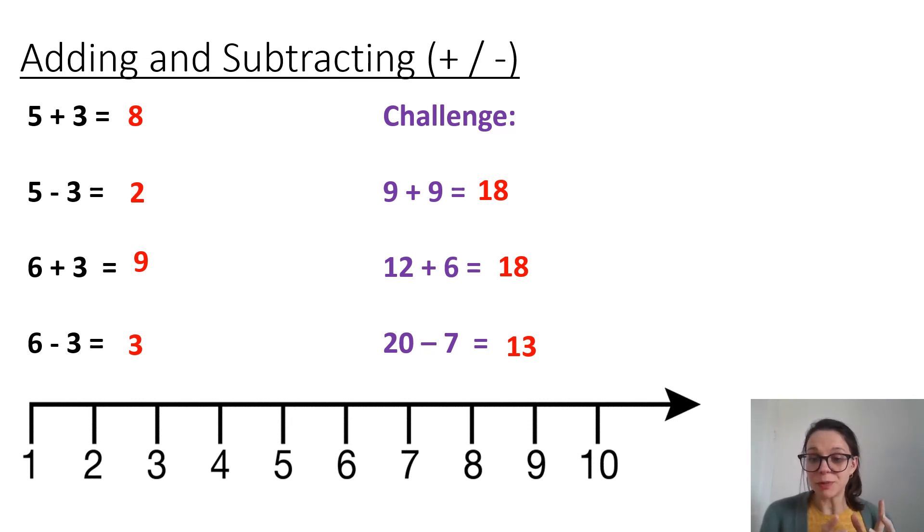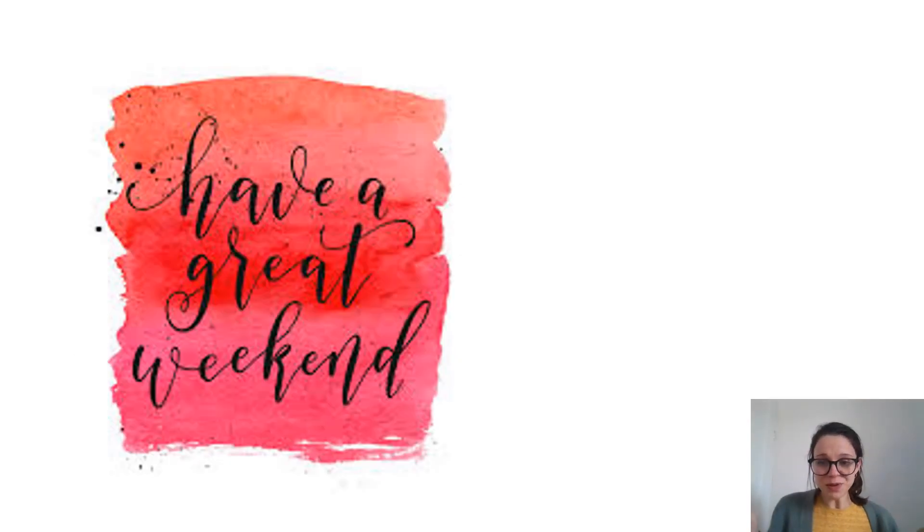And we can use our number bonds to help us with the second question. Twenty take away seven. Well, if it was ten take away seven, the answer would be three. So twenty take away seven is thirteen. If you got all those questions right, absolutely brilliantly done year one. Very impressive. And we're all done. Can you believe it? Have a fantastic weekend. You deserve it for working so hard. Take care, everybody. See you on Monday.